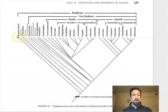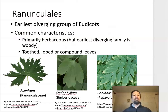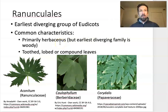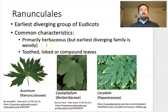Ranunculales is the first group to diverge. So what are some characteristics of the Ranunculales? They are primarily herbaceous. Now, this does not indicate that the ancestor of the group was not woody, because the earliest diverging family within Ranunculales is in fact woody. However, woodiness is less common within this group. Additionally, they commonly have toothed, lobed, or compound leaves.